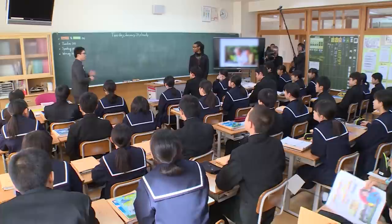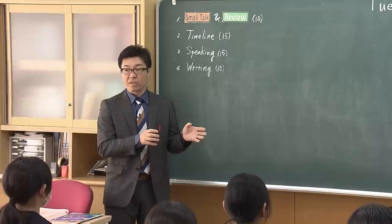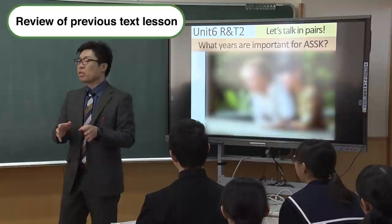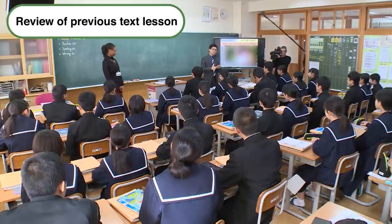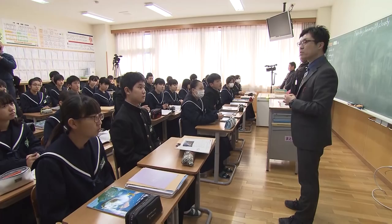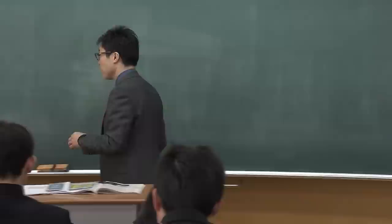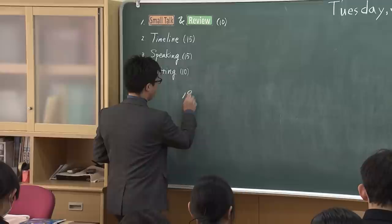Please look at the blackboard. There are four stages today: one, small talk and a kind of review; and second, timeline. You have already read about the political life of Aung San Suu Kyi and there are some important years for her, right? What years are important for Aung San Suu Kyi? In 1988.